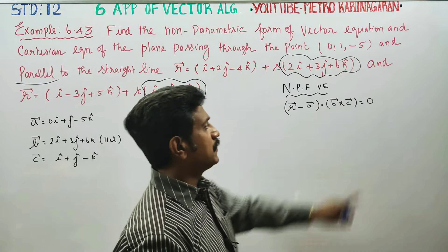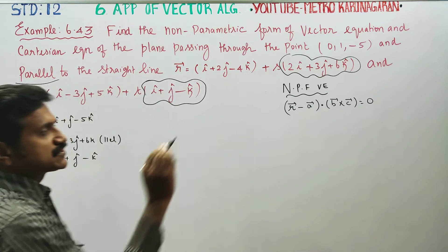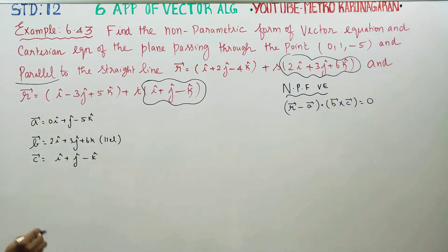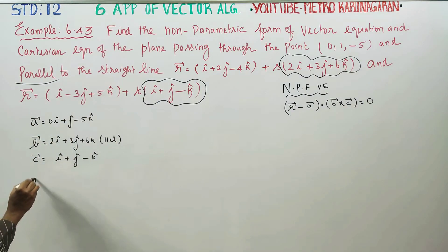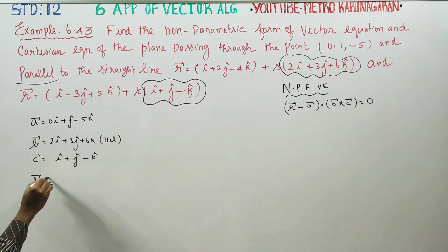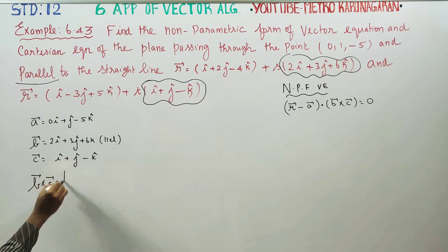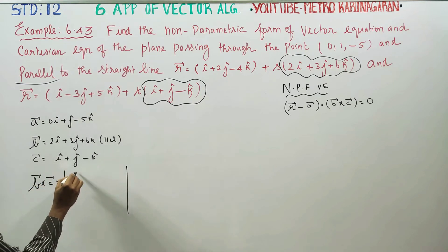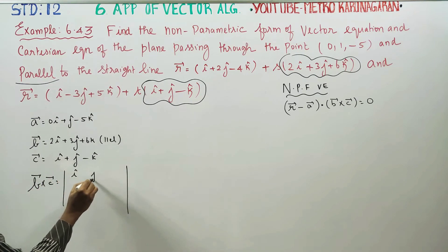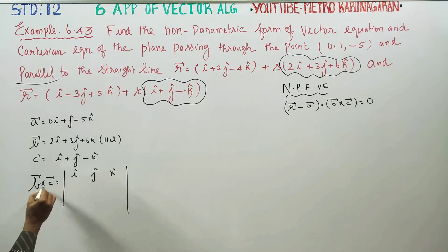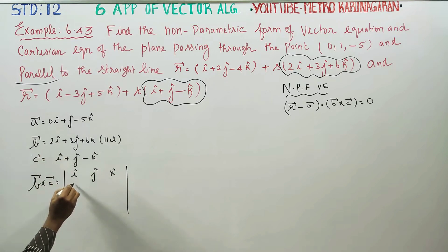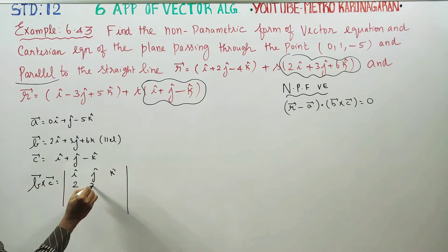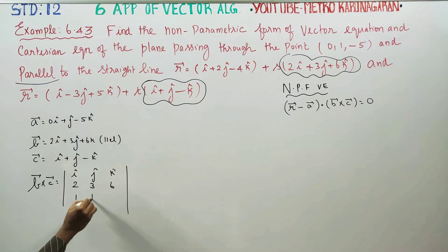To find b cross c, we set up the determinant with i, j, k. The b row is 2, 3, 6, and the c row is 1, 1, minus 1.